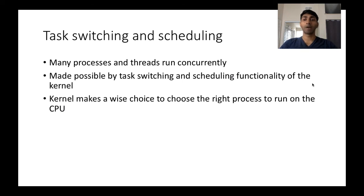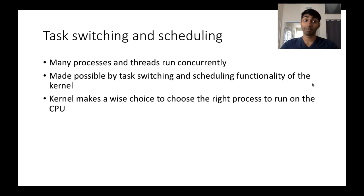Task switching and scheduling. Now that you have multiple processes and threads running concurrently, you need someone to run them at the right time. The kernel does that for you — it has a scheduler functionality that switches and schedules the right processes at the right time, making the wise choice to run the right process on the right CPU.